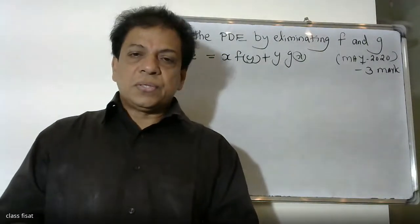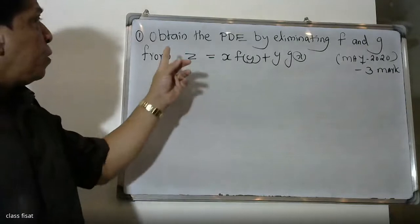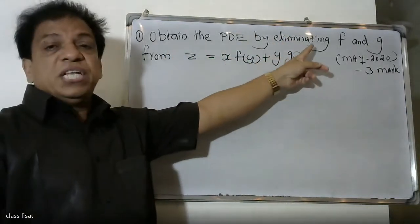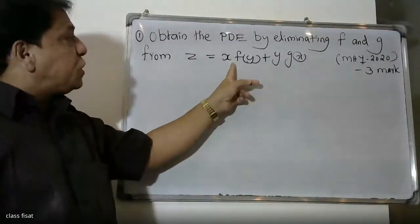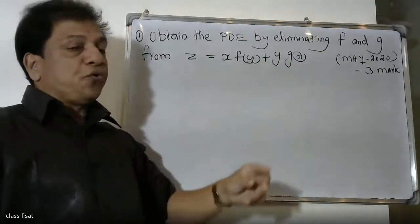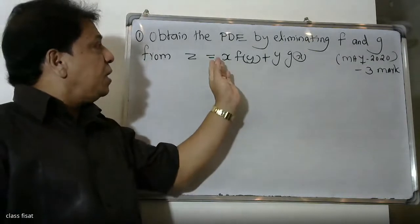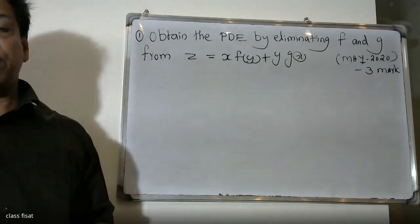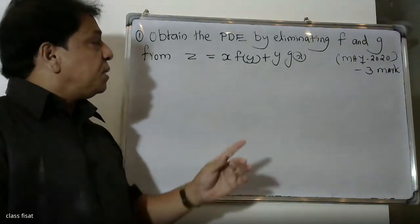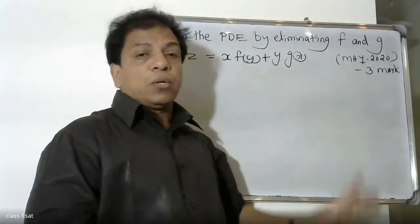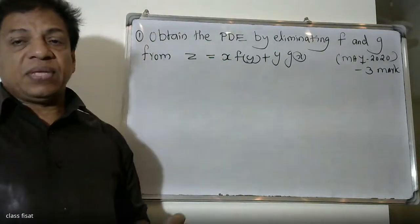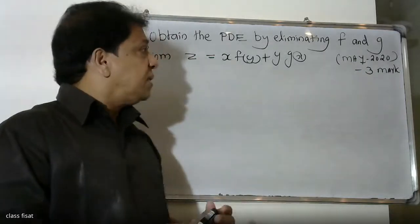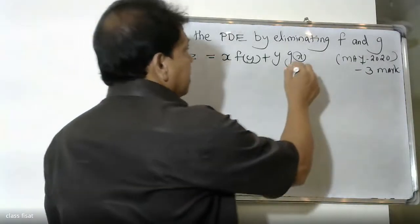Good morning friends. The problem is to obtain the partial differential equation by eliminating f and g from the equation z equals x into f of y plus y into g of x. We need to eliminate the arbitrary functions f and g using partial differentiation.